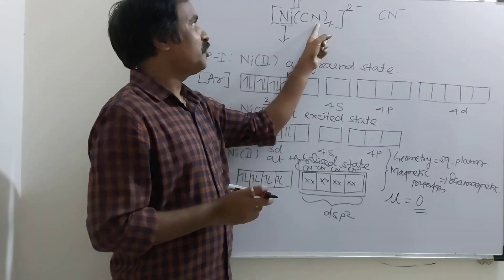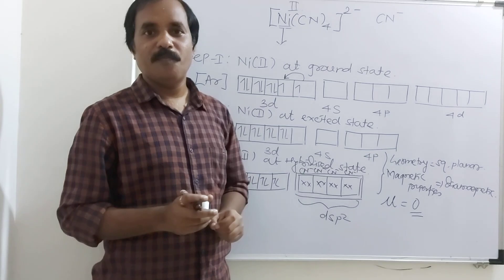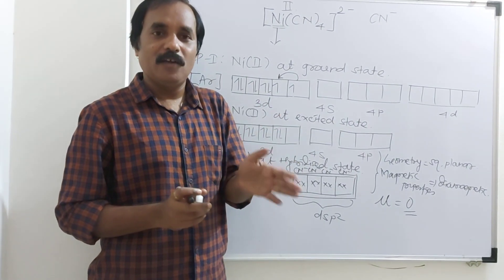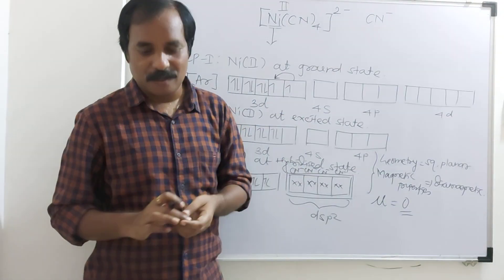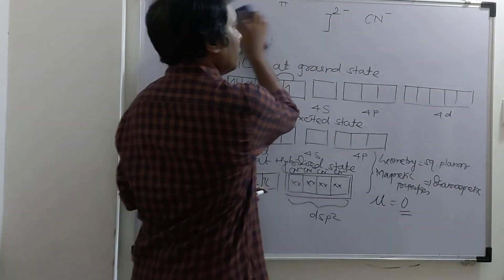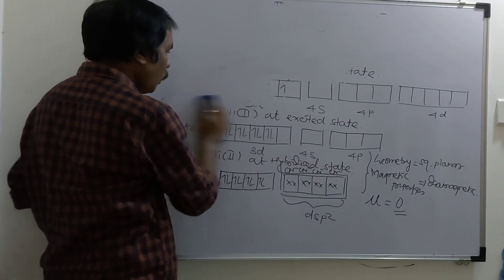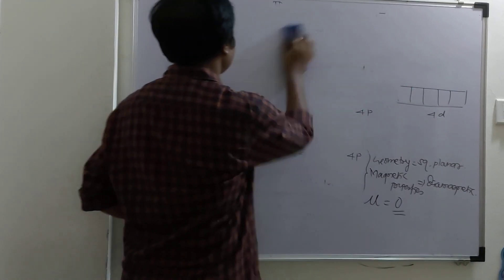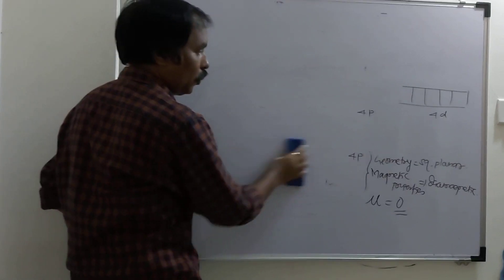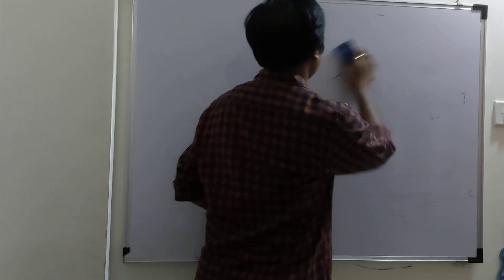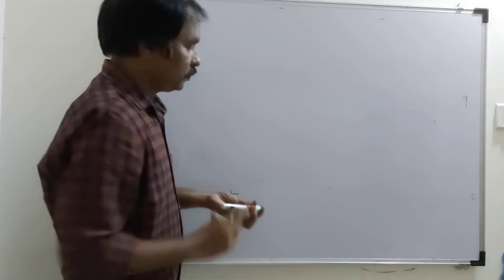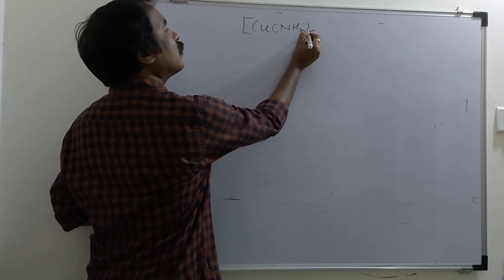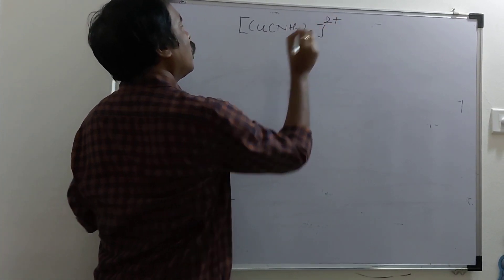So what is the conclusion? Tetracyanonickelate(2-) is an example of dsp² hybridization, the geometry is a square planar complex, and this is the application of VBT to square planar complex. Another example: tetraamminecopper(2+).